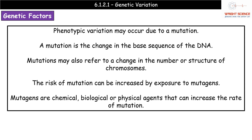One of the things that increases the risk of an organism having a mutation is exposure to what we call mutagens. A mutagen is simply some kind of chemical, biological, or physical agent that increases the rate at which mutations occur.